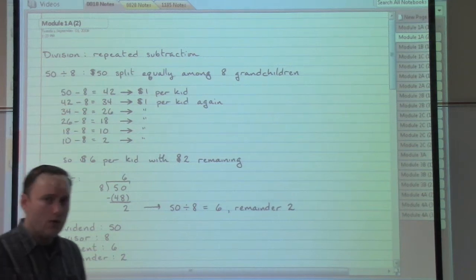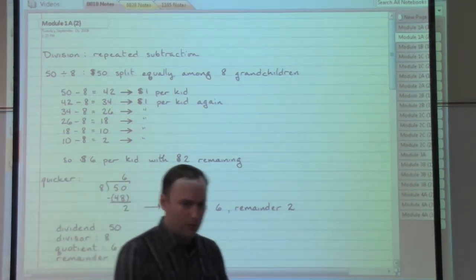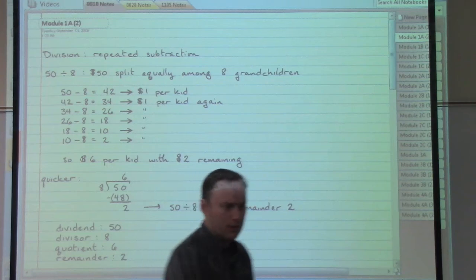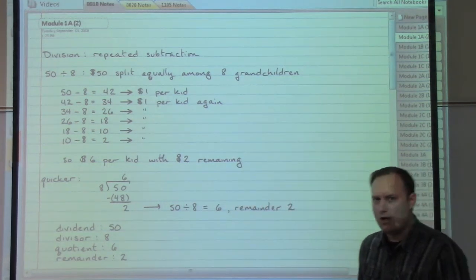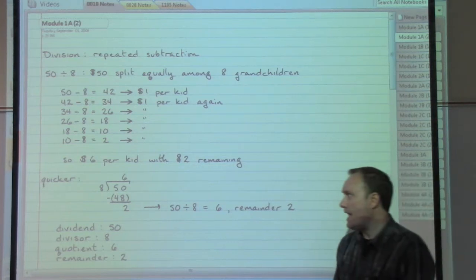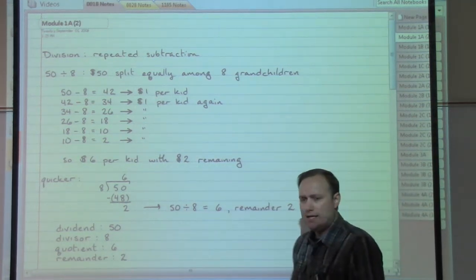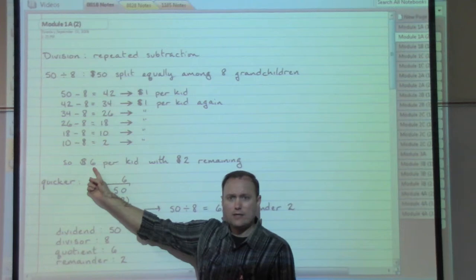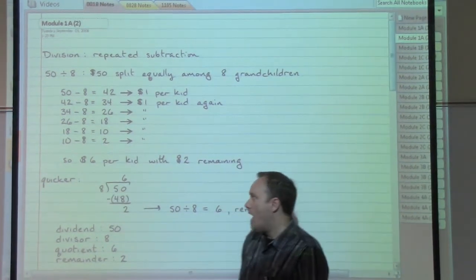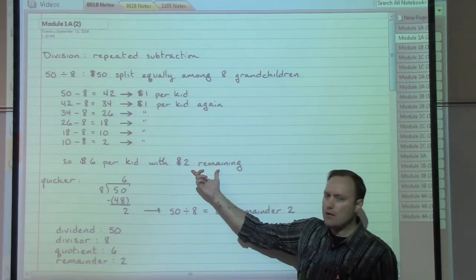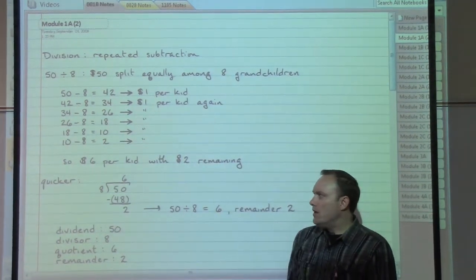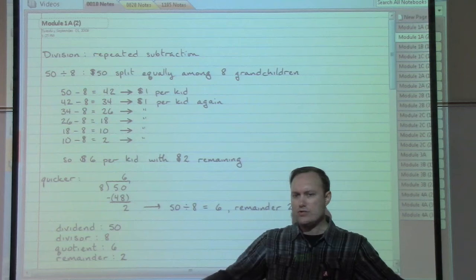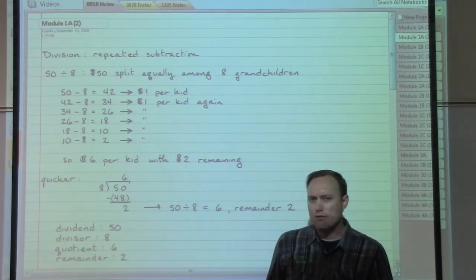We can start by lining all the grandkids up and going $1, $1, $1... each time subtracting off a dollar, moving from the front to the end of the line of kids, until each kid has got a stack of dollar bills — six of those dollar bills. I'm going to still have $2 in my hand. I can't break that up because we're only working with whole numbers. So each kid gets $6 and I have $2 left over.